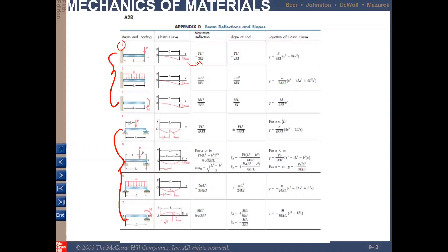For the cantilever beam, we have three different scenarios: concentrated loading, uniform loading, and moment loading. For the simply supported beam, we have four scenarios: P at the center, P slightly off center, uniform loading, and a moment at the end. For all these loading cases, the table provides the corresponding elastic curve and associated parameters for that beam.